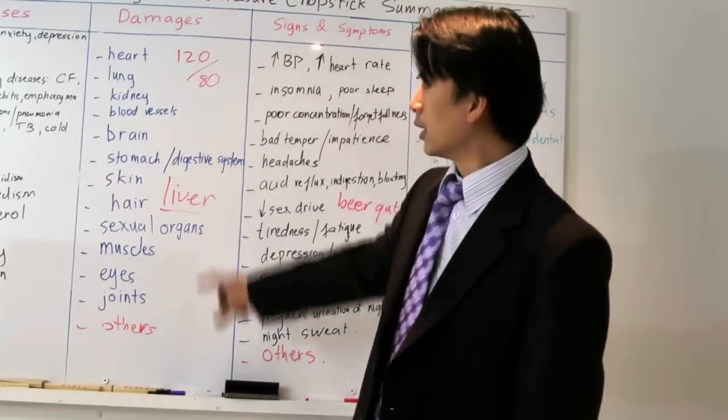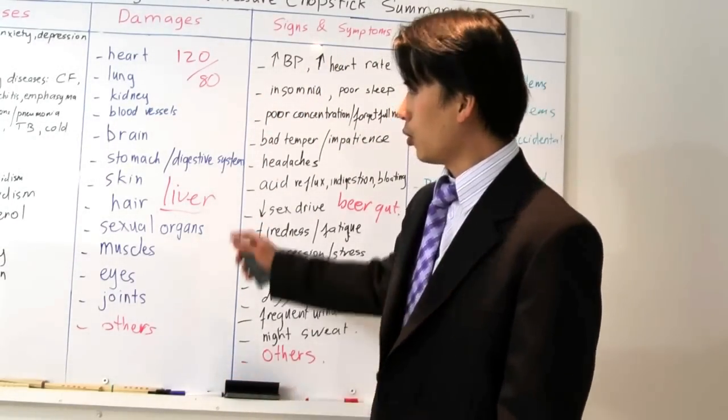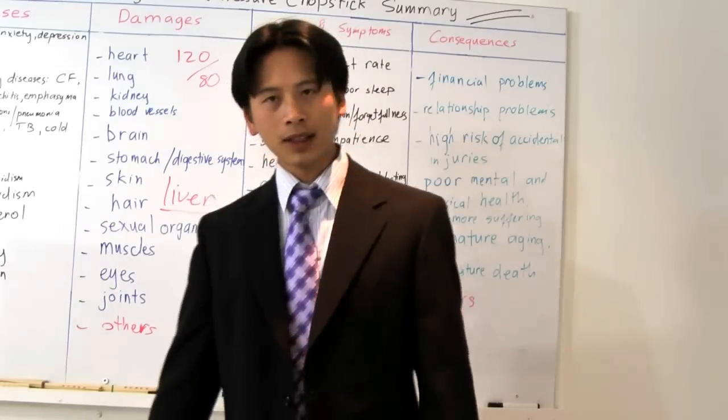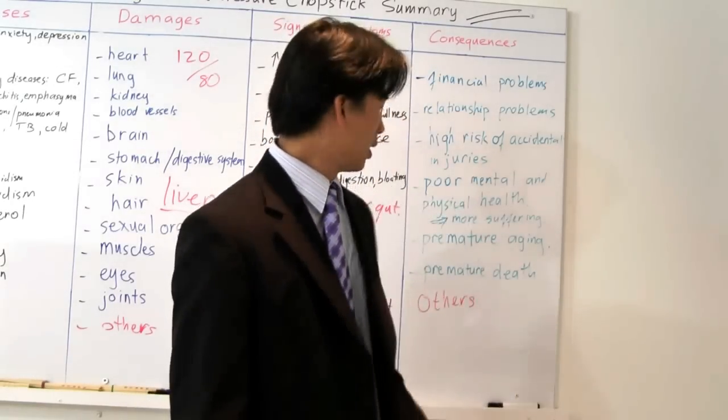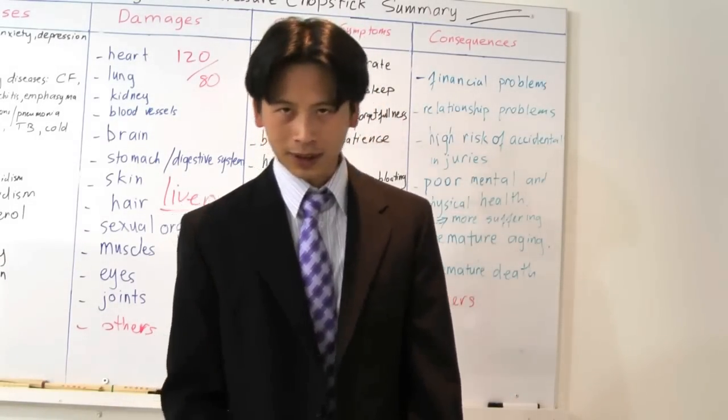Look at all the damages that's being done to your body, to all parts of your body. So that's some of the reasons how high blood pressure can lead to premature death.